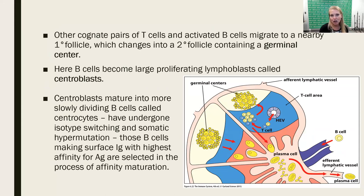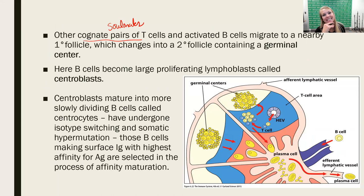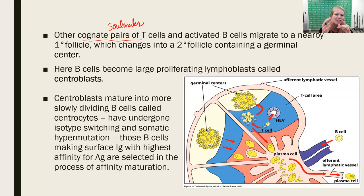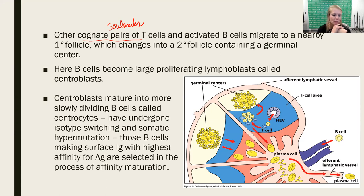When a T cell interacts with a B cell, we call that a cognate pair — I like to call them soulmates, because they both recognize the same antigen. The T cell receptor and B cell receptor have the same antigen specificity. That B cell will internalize the antigen, process it after internalization, and then display the processed antigen — which might look very different from how the B cell originally recognized it — in conjunction with MHC class II.